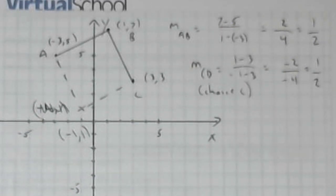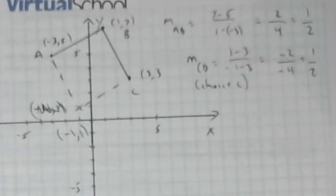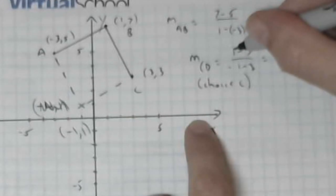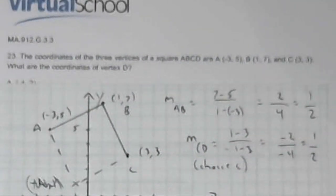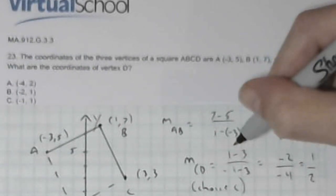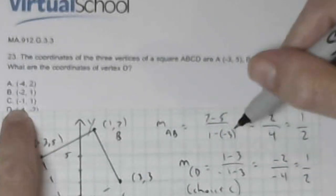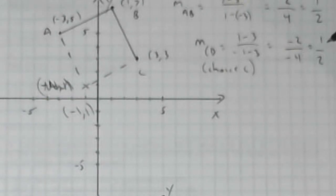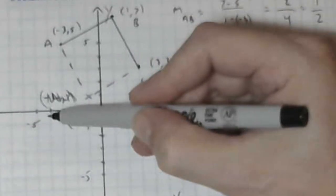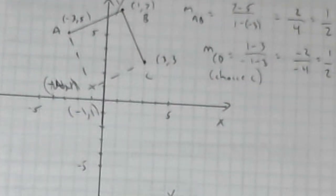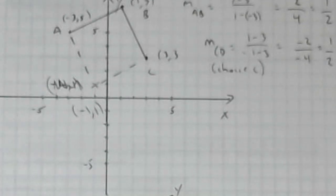The way to do this without graphing it would be to find the slope of side AB, 7 minus 5 over 1 minus negative 3. That's going to come out to 1 half. And then when I get down to choice C, 1 minus 3 over negative 1 minus 3, I want the slope to be the same thing, to be 1 half. It's best to just go ahead and sketch a graph, and then one of your answers is going to be both match your slope and be graphically in the region that you want.